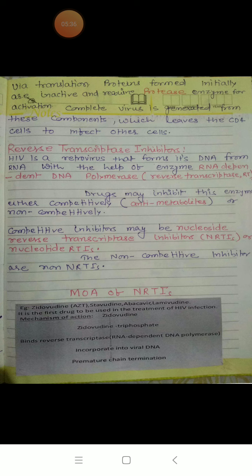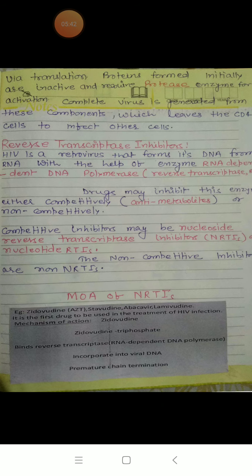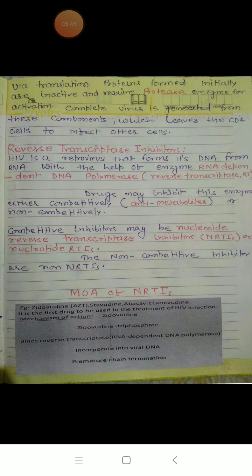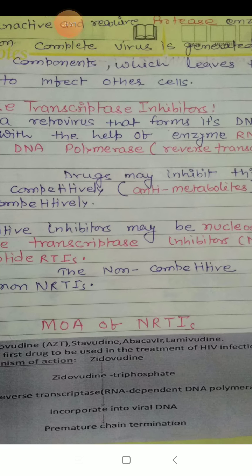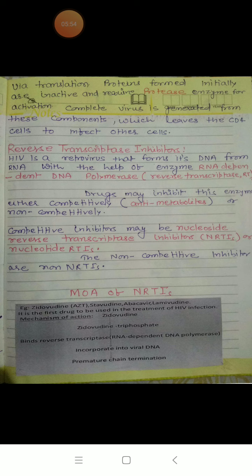Nucleoside reverse transcriptase inhibitors bind competitively while non-nucleoside reverse transcriptase inhibitors bind non-competitively — both block reverse transcriptase. For example, zidovudine is converted to zidovudine triphosphate, its activated form, which binds to reverse transcriptase — also called RNA-dependent DNA polymerase — and is incorporated into viral DNA causing premature chain termination, halting further viral replication.